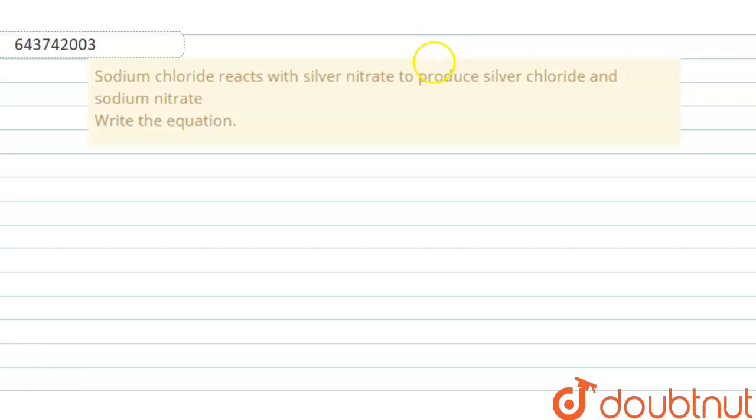where we have to give a reaction: sodium chloride reacts with silver nitrate. Let me just highlight sodium chloride reacts with silver nitrate to produce silver chloride and sodium nitrate. I have highlighted the reactants with yellow and the product with blue.